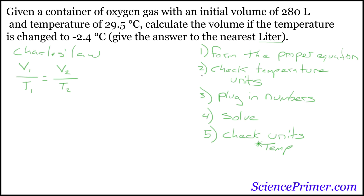Temperature units need to be in Kelvin for this relationship to hold, and you'll often have temperature in a unit other than Kelvin — in this case we're in degrees Celsius. The relationship we need for steps two and five is that temperature in Kelvin equals the number in degrees Celsius plus 273.15. So if you have something in degrees Celsius and need Kelvin, just add 273.15. If you need to go the other way, Celsius equals Kelvin minus 273.15.